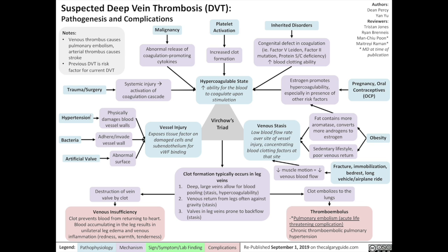What can cause vessel injury? Three main things: high blood pressure — hypertension — which physically damages blood vessel walls; bacteria, which can adhere and invade the blood vessel walls; and artificial heart valves, which represent an abnormal surface to blood flow.